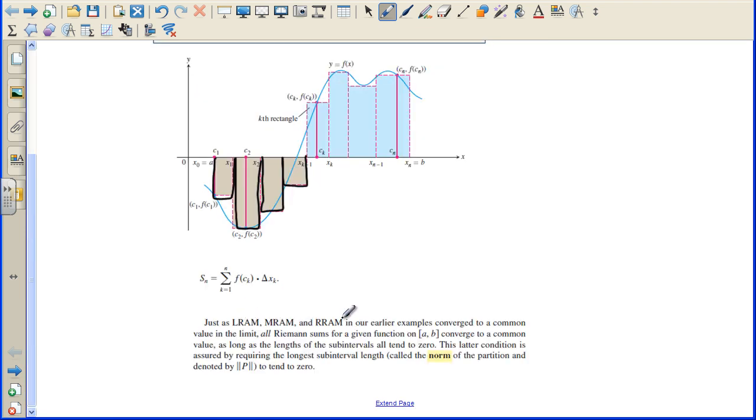Just as LRAM, MRAM, and RRAM in our early examples converged to a common value in the limit. Remember when we did 100 intervals and then we did 500 intervals, it was converging to a value. All Riemann sums for a given function on A to B converge to a common value as long as the lengths of the sub-intervals all tend to zero. The latter condition is assured by requiring the longest sub-interval length, called the norm of the partition, to tend to zero as well.